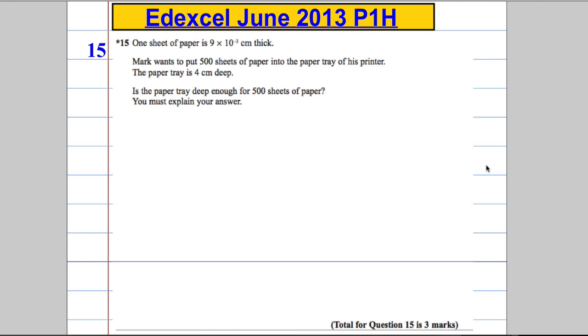We're told one sheet of paper is 9 by 10 to the negative 3 centimeters thick. Mark wants to put 500 sheets of paper into the paper tray, but it tells us that the paper tray is 4 centimeters deep. Is the paper tray deep enough for 500 sheets of paper? What an exciting problem.